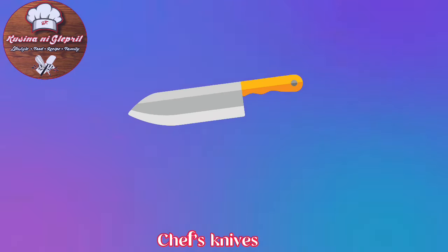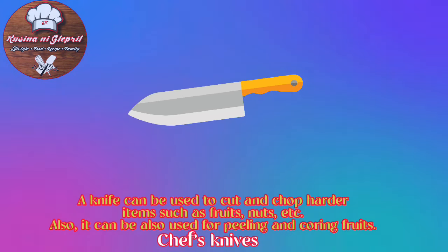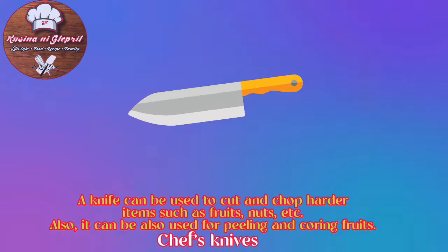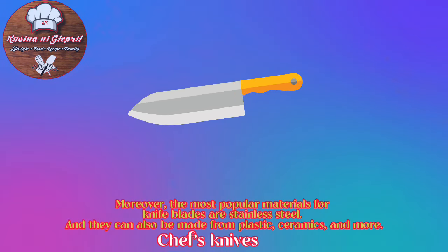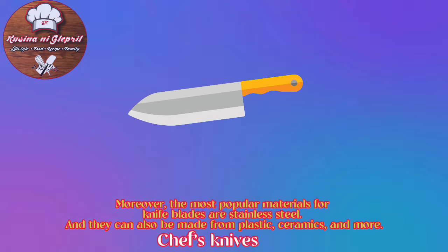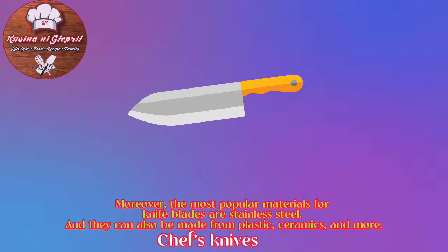Chef's Knives: A knife can be used to cut and chop harder items such as fruits, nuts, etc. It can also be used for peeling and coring fruits. The most popular materials for knife blades are stainless steel, though they can also be made from plastic, ceramics, and more.